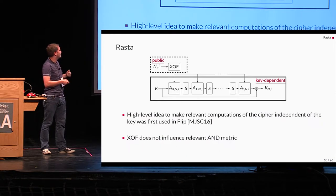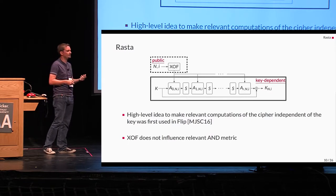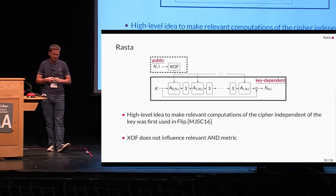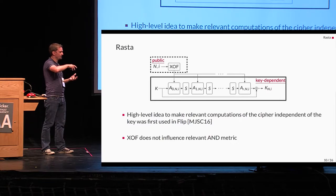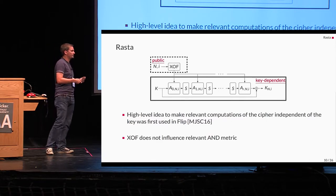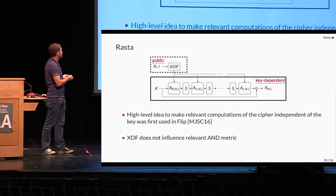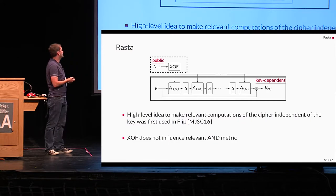So the high level idea to make relevant computations of the cipher independent of the key was first used in FLIP. But here it was used to permute the input key to a static set of functions. And we have taken this approach further in making more parts of the cipher essentially changing. And what's also important is since the extensible output function do not use any key material, it doesn't influence the relevant AND metric.